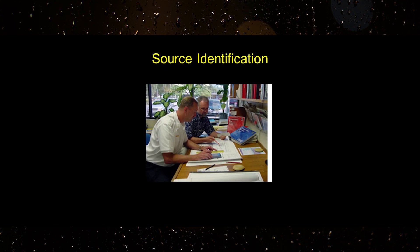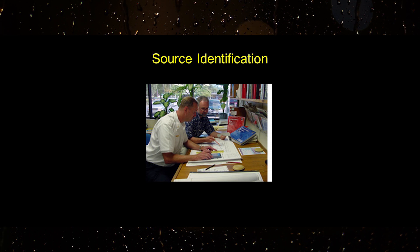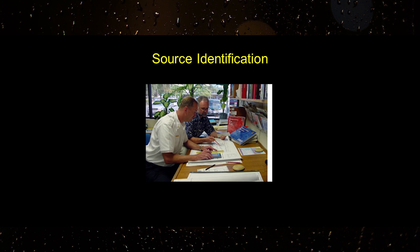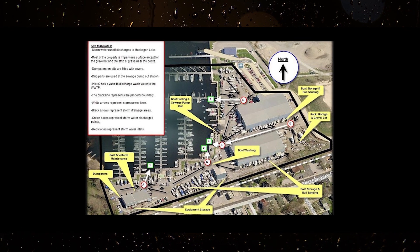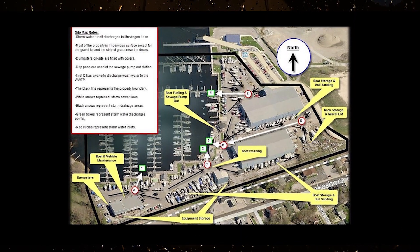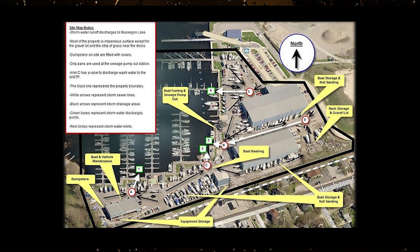The first step in developing a stormwater pollution prevention plan is source identification. A site map or sketch must be completed to adequately assess the facility. The stormwater permit requires the following 13 items to be identified on the site map.